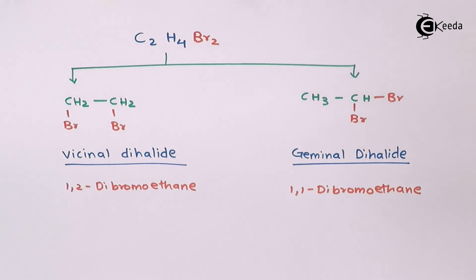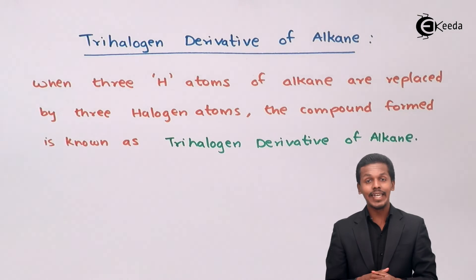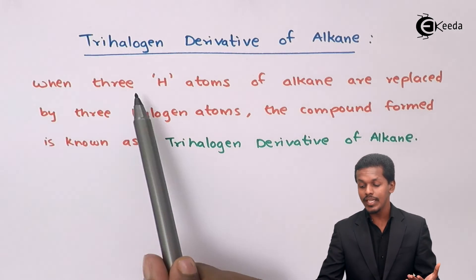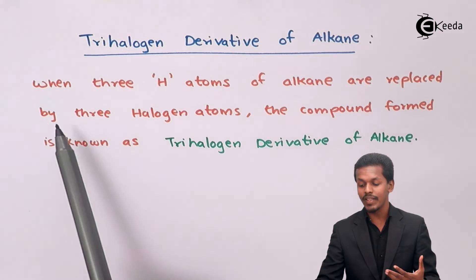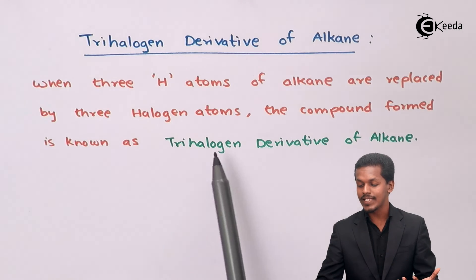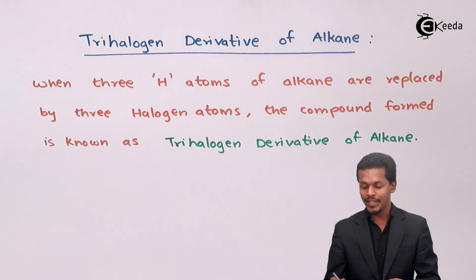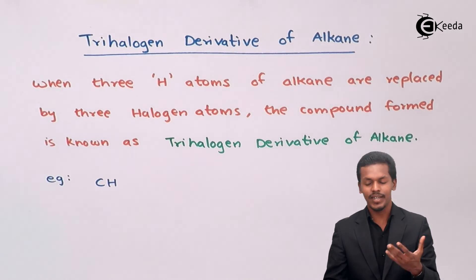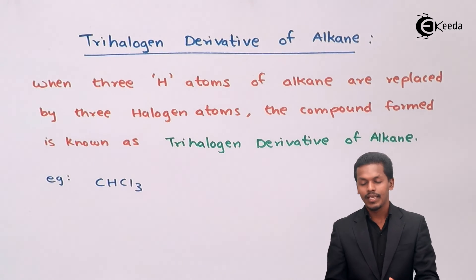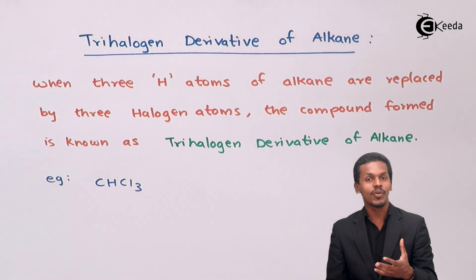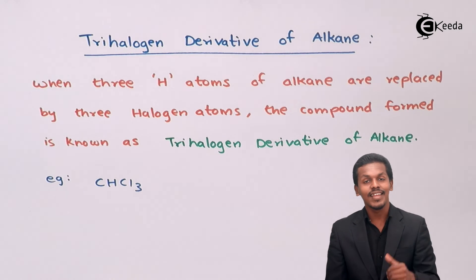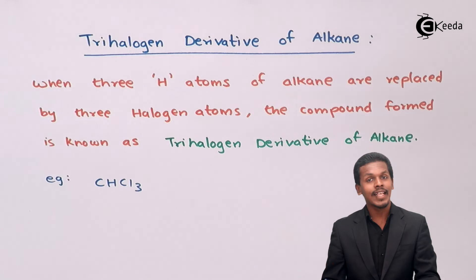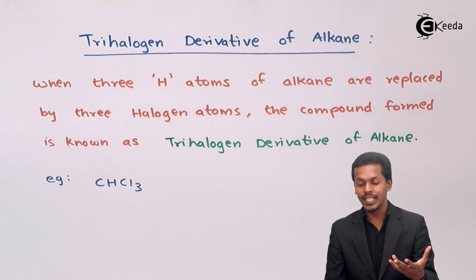Now let us talk about the trihalogen derivative of alkane. When three hydrogen atoms of an alkane are replaced by three halogen atoms, the compound formed is known as trihalogen derivative of alkane. For example, CHCl₃ — this is also known as chloroform, or by its IUPAC name, trichloromethane. This is an example of a trihalogen derivative of alkane.